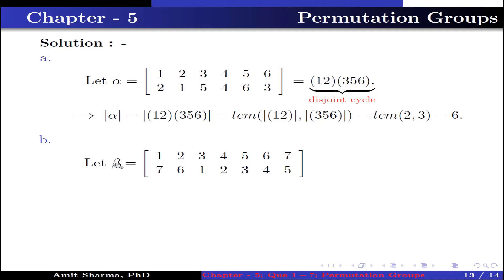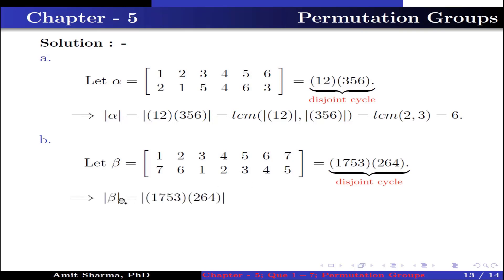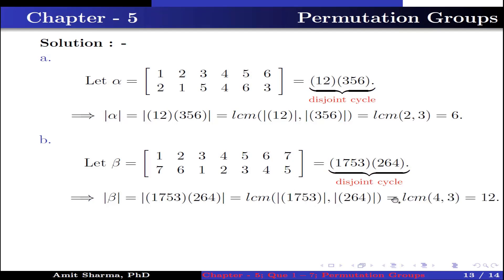Part B: beta is the permutation where 1→7, 2→6, 3→1, 4→2, 5→3, 6→4, 7→5. Written as disjoint cycles: (1 7 5 3)(2 6 4). Order of beta = LCM(order of (1 7 5 3), order of (2 6 4)) = LCM(4, 3) = 12. Therefore order of beta is 12.